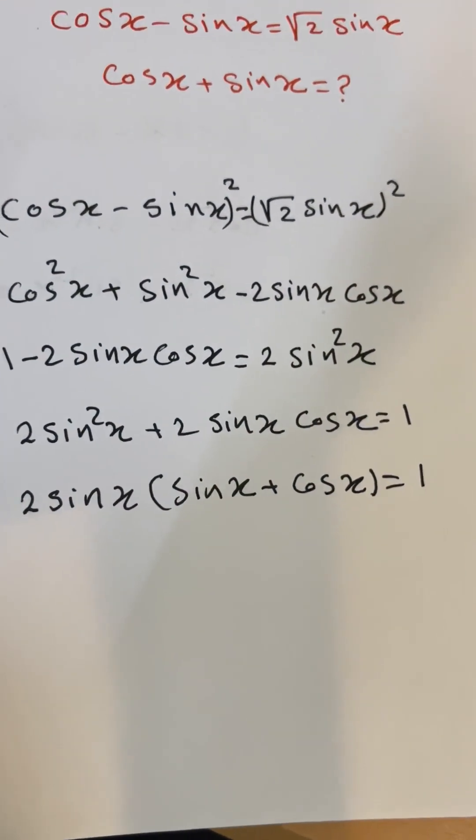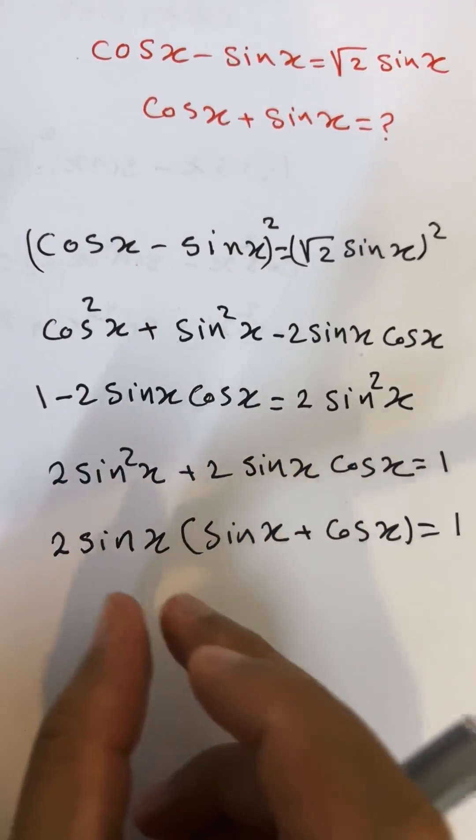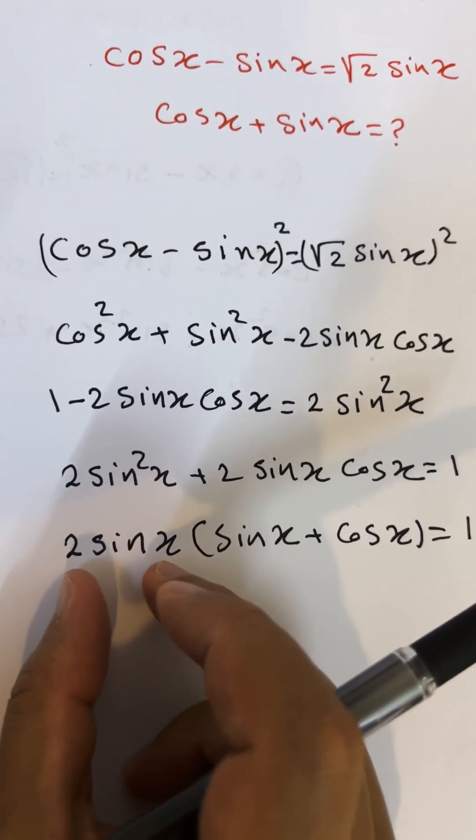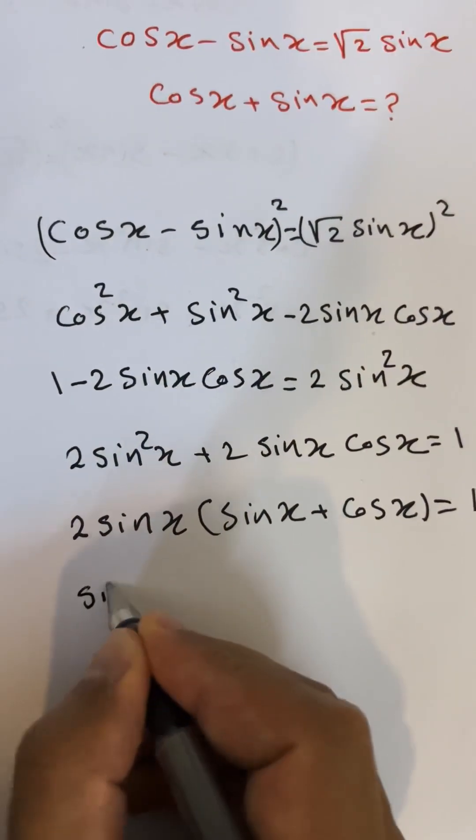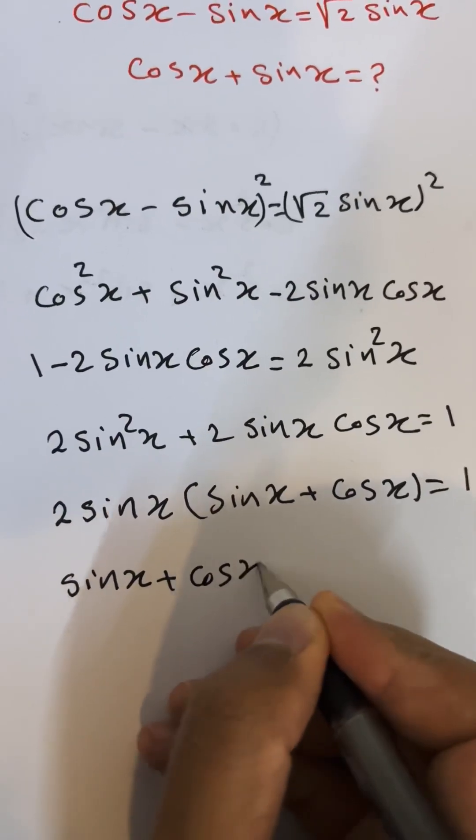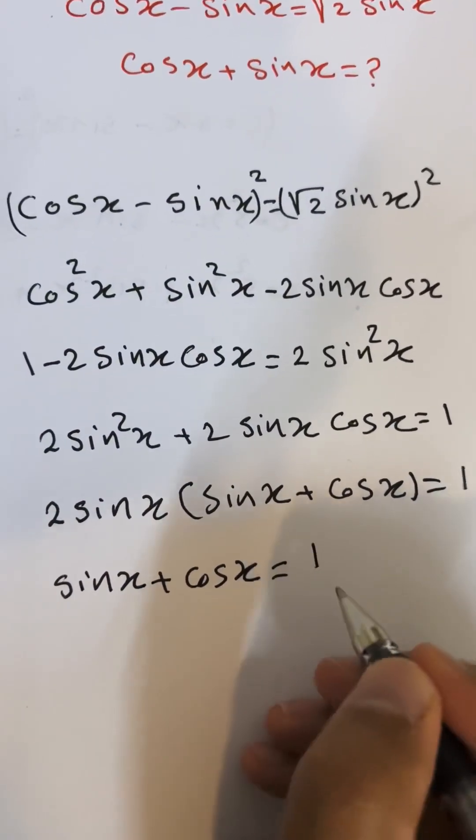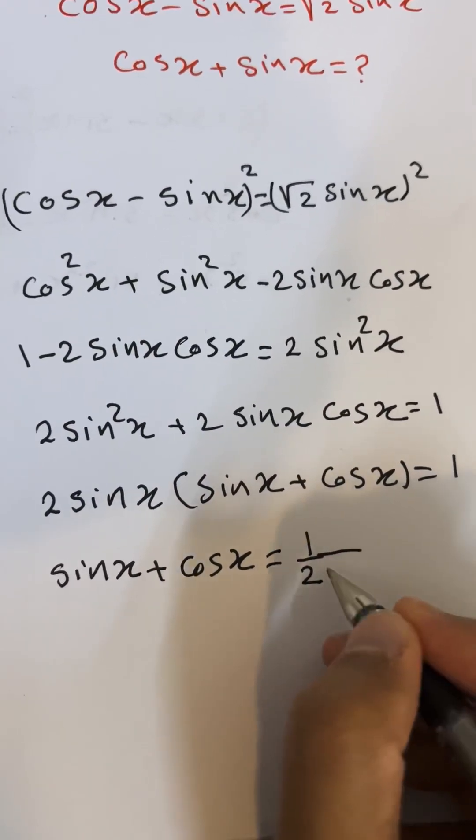We need to find cosine x plus sine x. It's already here, but there's something multiplied by it. I can cancel it—divide both sides by 2 sine x. You get sine x plus cosine x equals 1 over 2 sine x.